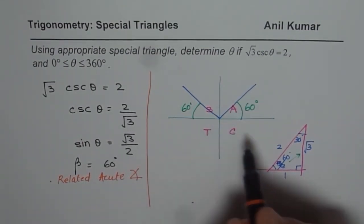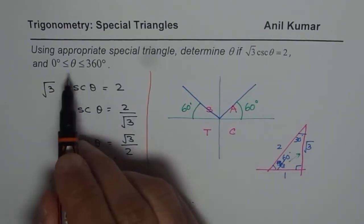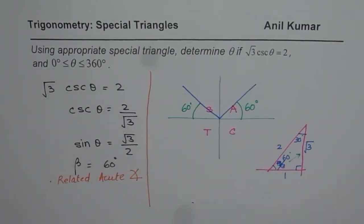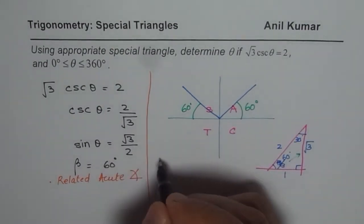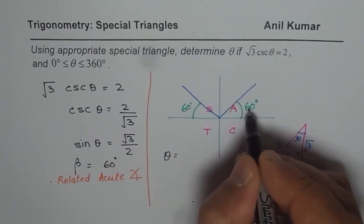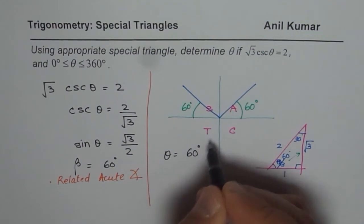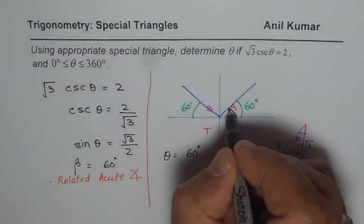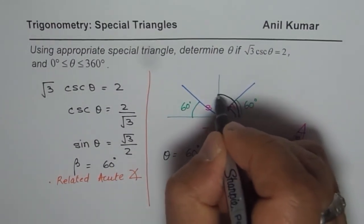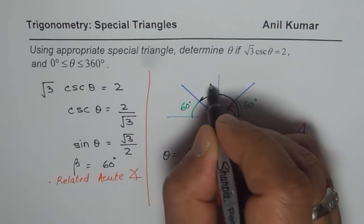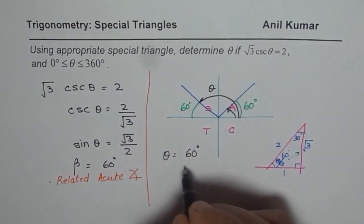Now, you find the principal angle. The principal angle θ in this particular case is 60 degrees. That is the first answer. And the other one is here—that is θ.